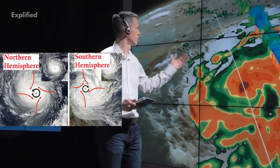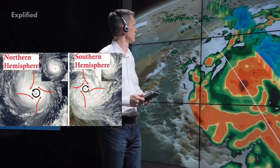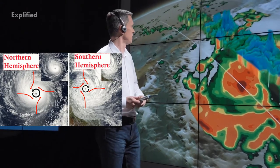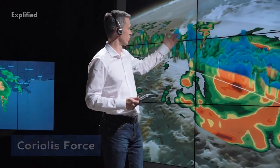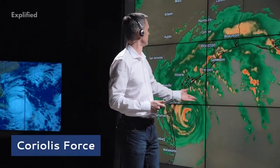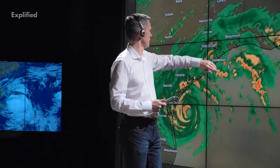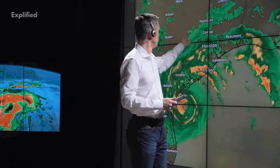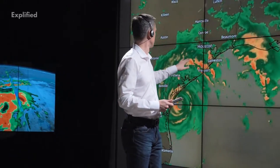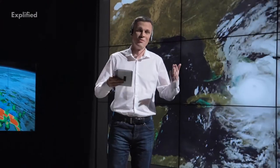Cyclonic movements are usually anti-clockwise in the northern hemisphere and clockwise in the southern hemisphere. This phenomenon occurs due to the Coriolis force. Cyclones are also often characterised by the existence of an anti-cyclone between two separate cyclones.